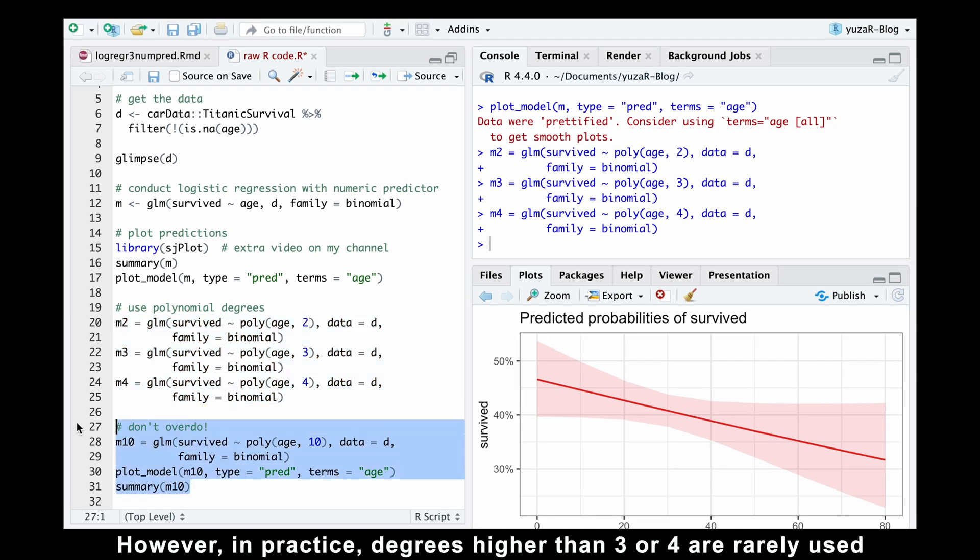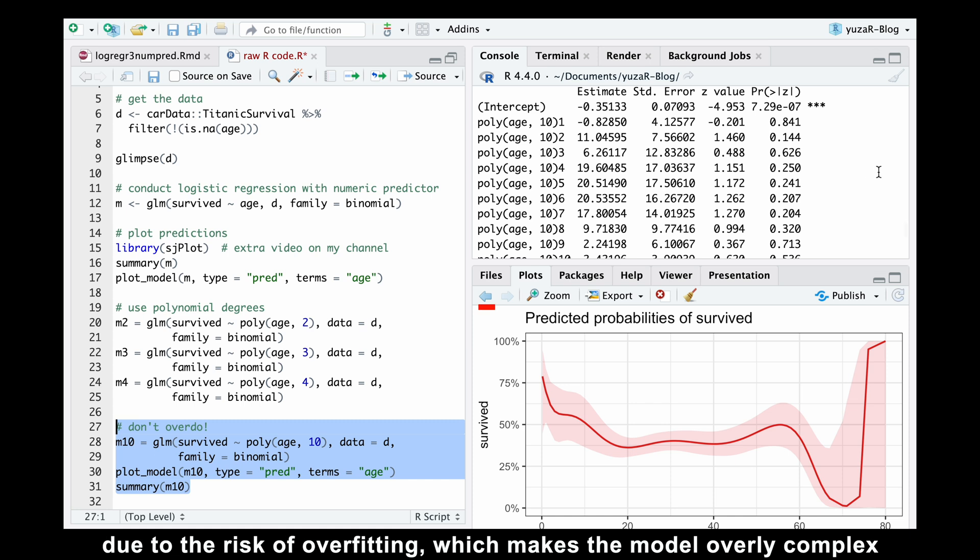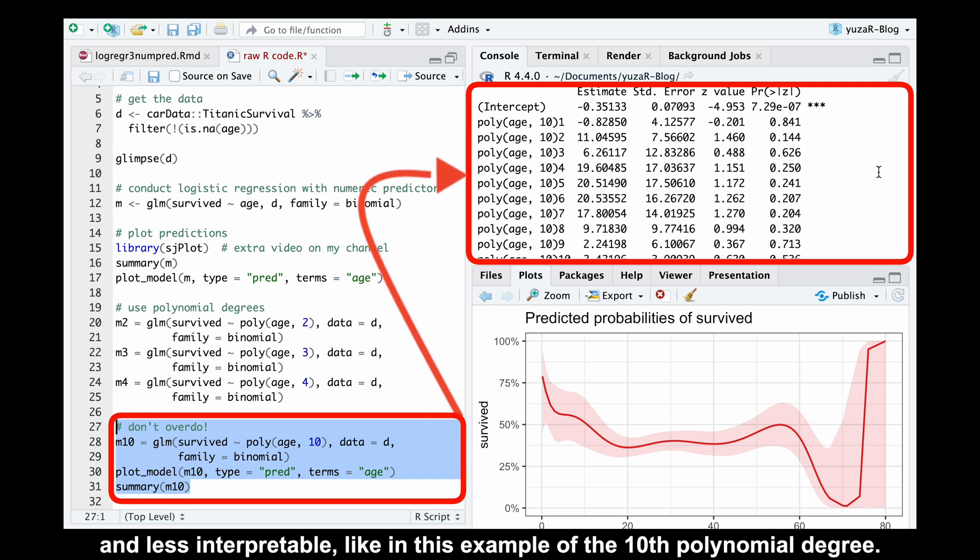However, in practice, degrees higher than three or four are rarely used due to the risk of overfitting, which makes the model overly complex and less interpretable, like in this example of the 10th polynomial degree.